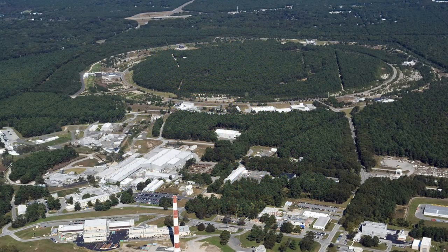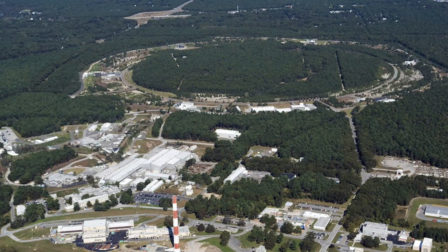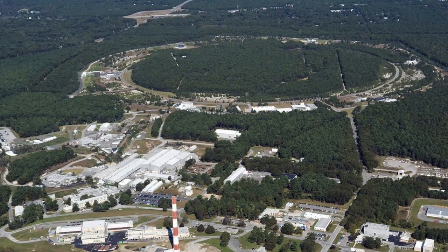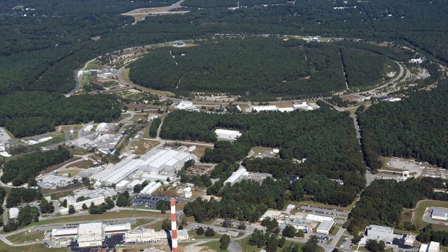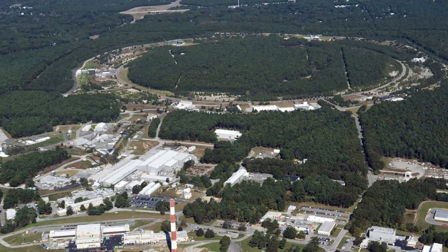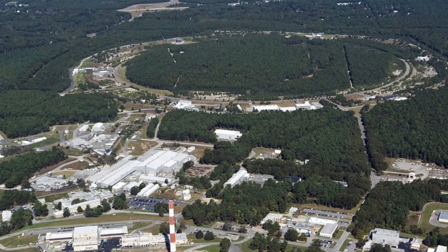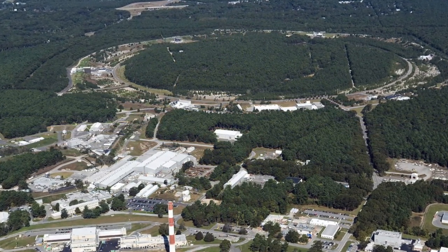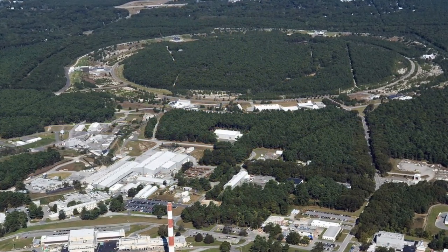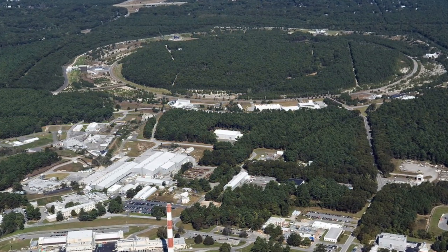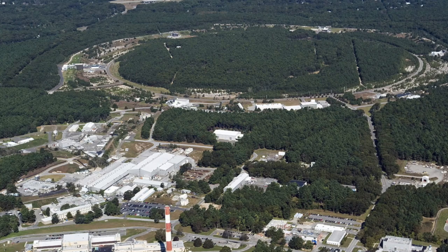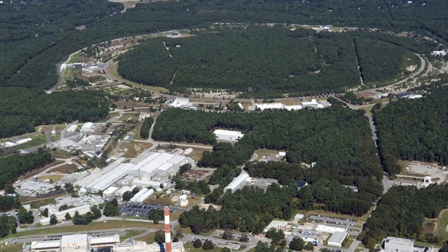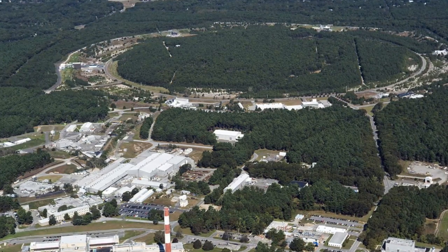The danger from strangelets was first raised in connection with a high-energy device called the Relativistic Heavy Ion Collider, or RHIC, at Brookhaven National Laboratory on Long Island, New York. The RHIC smashes together gold nuclei moving close to the speed of light, and there were concerns before it went into action in 2000 that it might prove to be a strangelet factory, with unpleasant consequences for the planet.